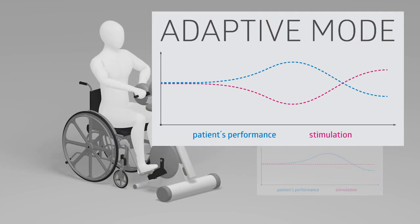In adaptive mode, the stimulation adapts automatically to the patient's performance. When a certain speed is reached, stimulation will decrease slowly. The stimulation increases again if the patient becomes more passive.